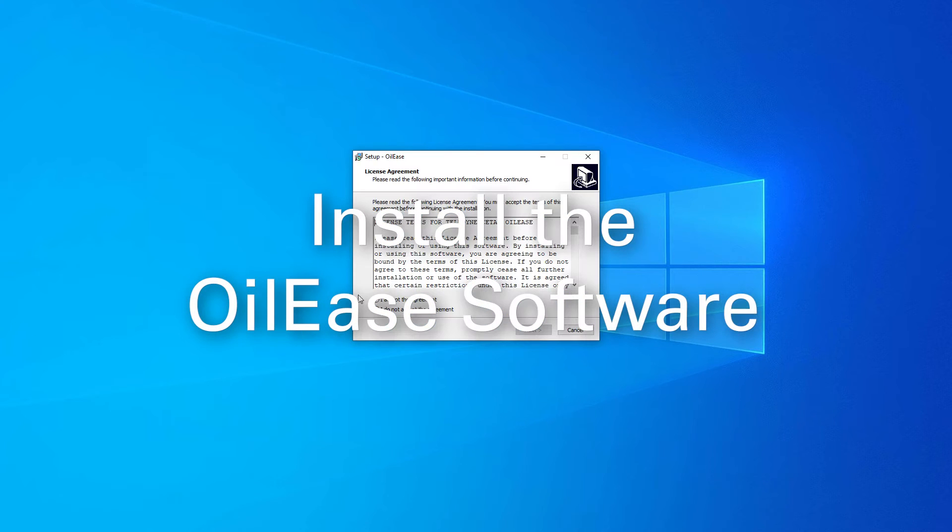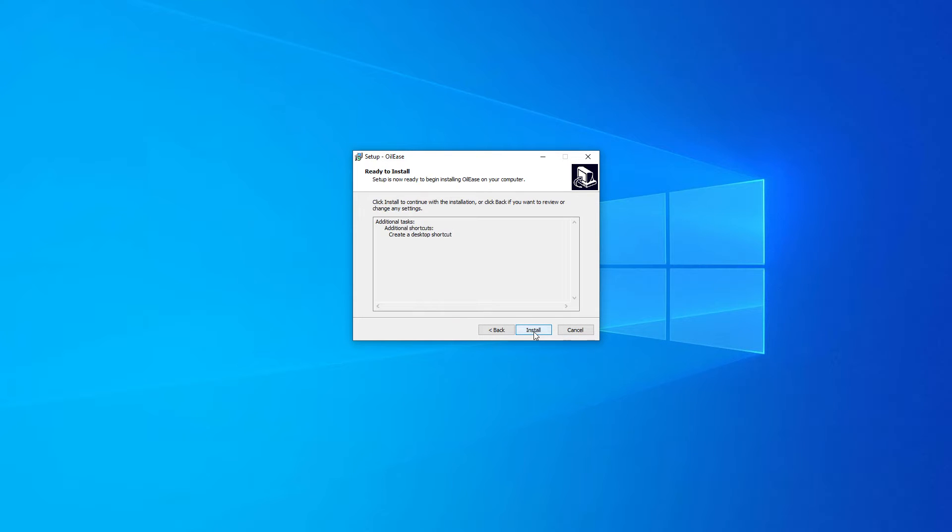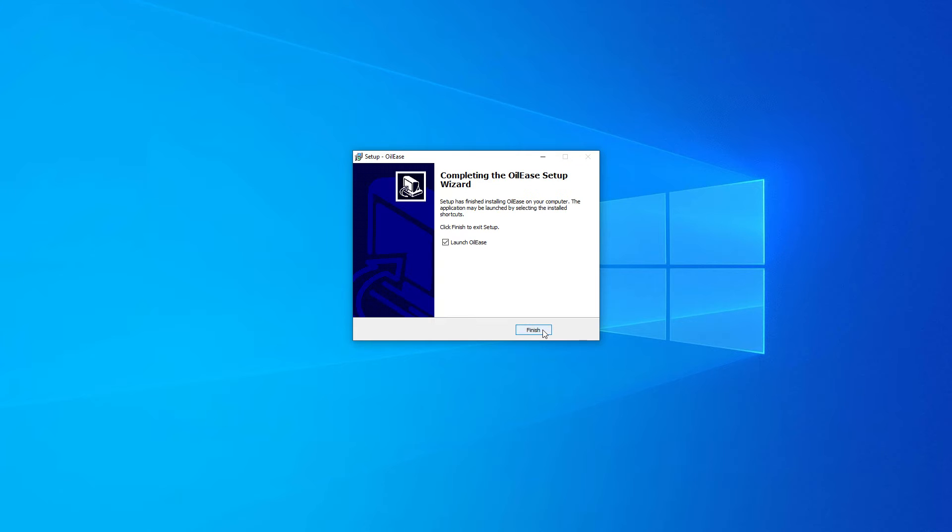Install the OilEase software from the included CD on your computer. Double-click the OilEase installation file and follow the prompts to complete the installation.